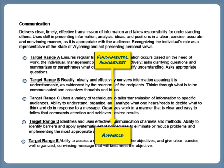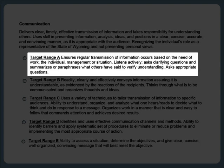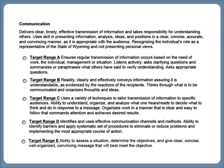Now let's look at target ranges for communication. There are five ranges, A through E, which represent increasing levels of competence. Let's consider each target range, starting with the minimum expectations for communication laid out in target range A. A position set to this target range asks that an employee ensures regular transmission of information occurs based on the need of work, the individual, management, or situation. Listens actively, asks clarifying questions, and summarizes or paraphrases what others have said to verify understanding, and asks appropriate questions. Because target range A is the minimum expectation for any employee, this could definitely apply. But let's take a look at the rest of the target ranges.